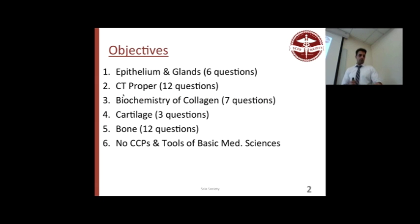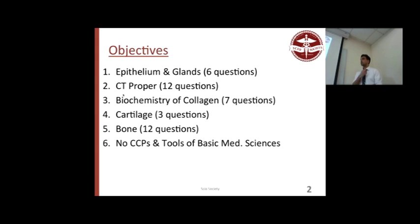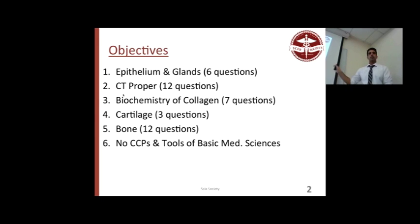We'll go with the same order as the basic tissue: epithelium, CT proper, biochemistry, cartilage, and bone. There are no CCPs and no basic tissues because they're not on the test. That's mainly why.